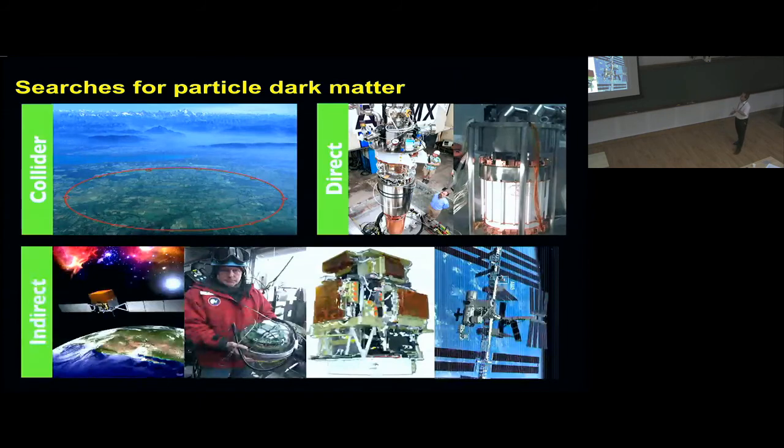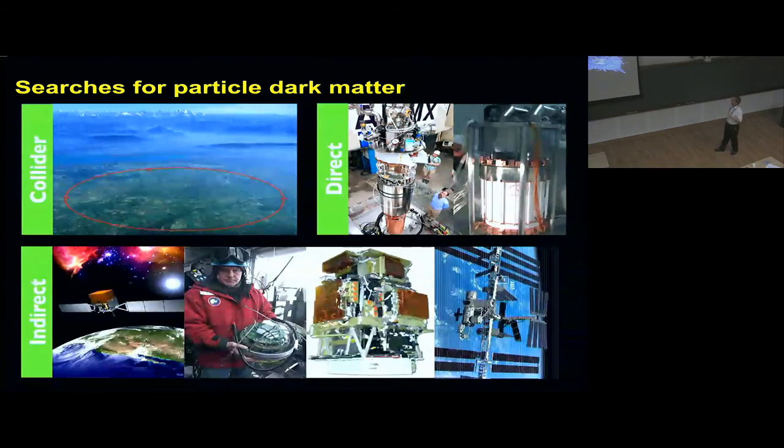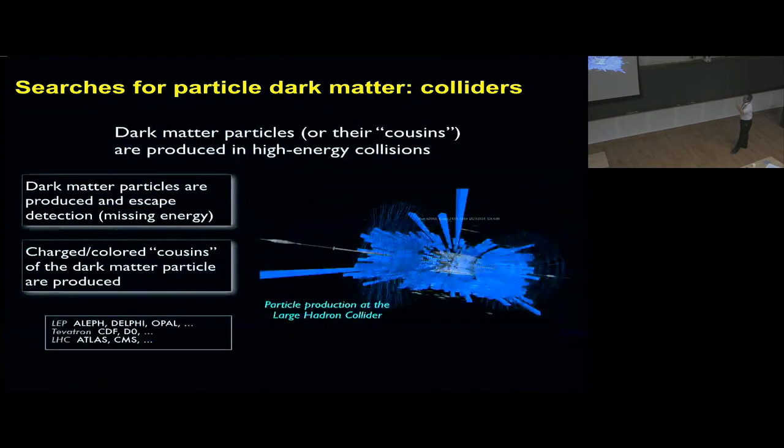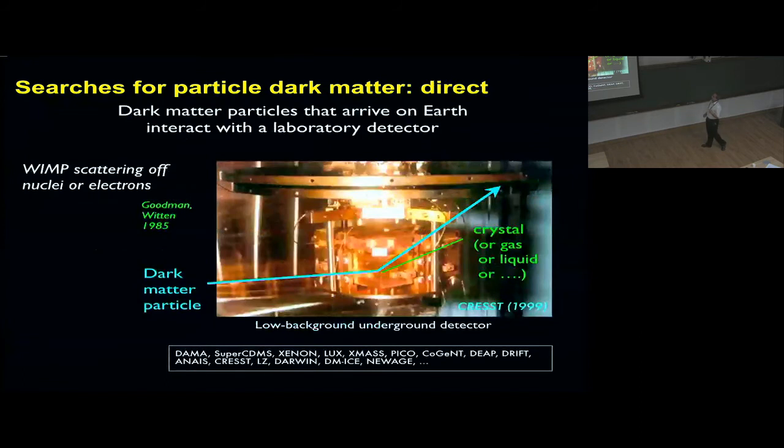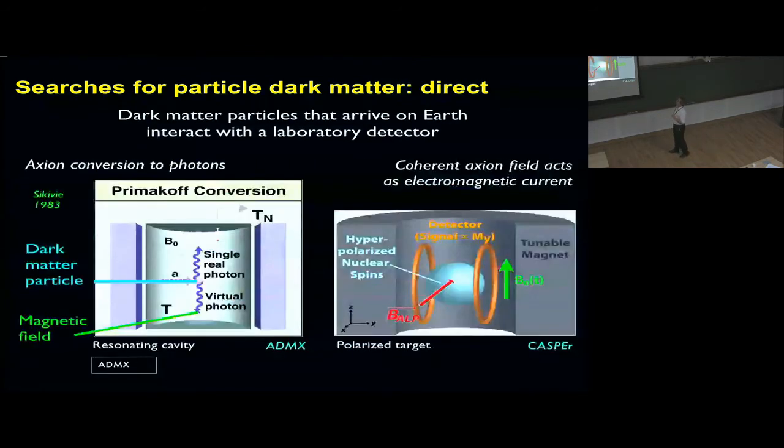Do we have signals from non-baryonic dark matter? Too many, I would say. Here's a lot of searches: collider, direct, and indirect. In colliders, we typically don't see the dark matter particles because they're electrically neutral. We see some cousins of these particles—like in supersymmetry, we would see the charginos, not the neutralinos. In other cases, we could search for missing energy. These are mono-X searches, mono-jets, and so on.